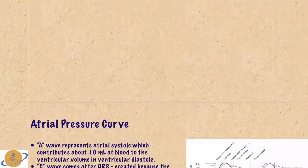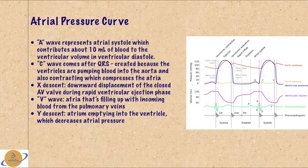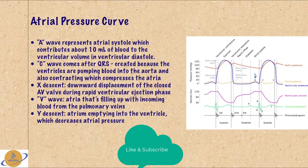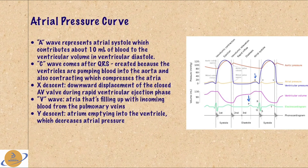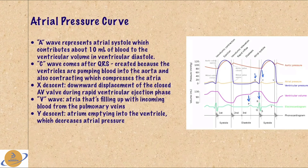Looking at the atrial pressure curve: the first wave is the A wave, and it occurs after the P wave in the EKG. The P wave represents atrial depolarization, and the A wave represents atrial contraction — this contraction pumps about 10 milliliters of blood into the ventricular volume during ventricular diastole. Next, we have the C wave, which comes after the QRS. Because the ventricles are contracting, it bulges the AV valve up into the atria and increases its pressure slightly, which shows up as the C wave.